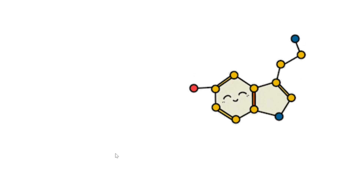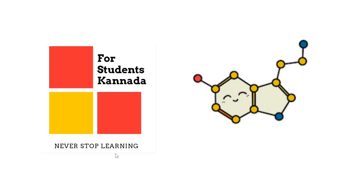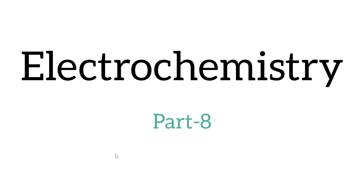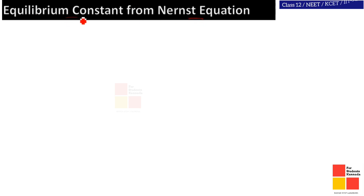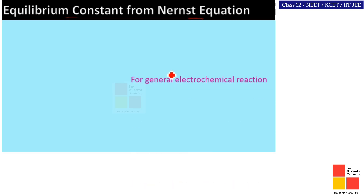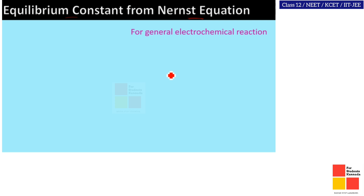My students, welcome back to 4students. This is Part 8 video of electrochemistry. In this video, we will see the next equation of the equilibrium constant. Consider one general electrochemical reaction: A plus B gives C plus D.